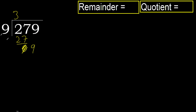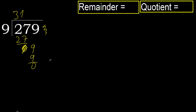Eliminate 0 on this side. 9 multiplied by 2 is greater, 9 multiplied by 1 is 9, it's not greater. Subtract. There is no number remaining, therefore finish.